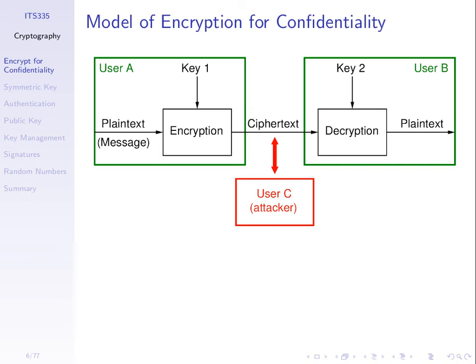So what we need is some encryption and decryption algorithms such that we take some message, apply some key, apply the algorithm, and get cipher text. We can only successfully get the plain text out if we have a key. If we don't have a key, we cannot get the plain text out. So we need algorithms that have that property, and that's what we'll go through — what algorithms can achieve that.